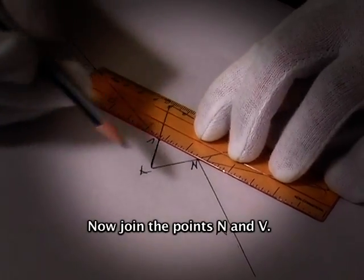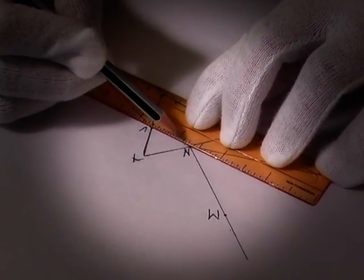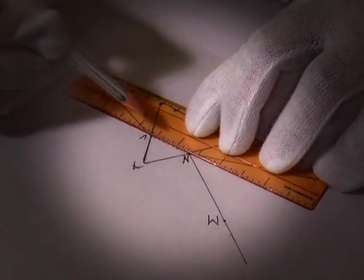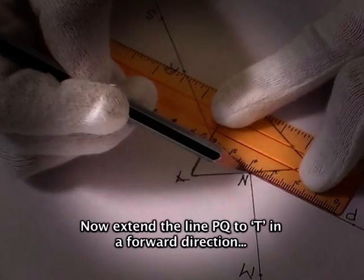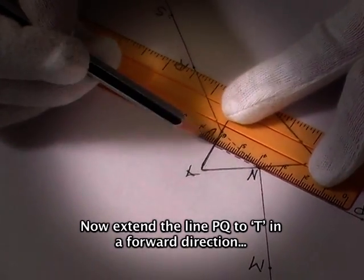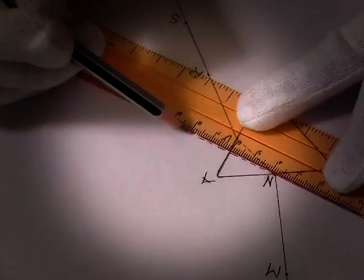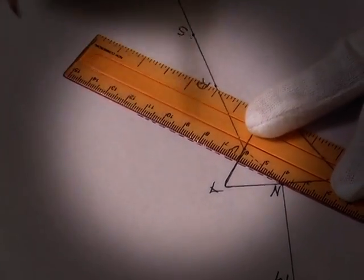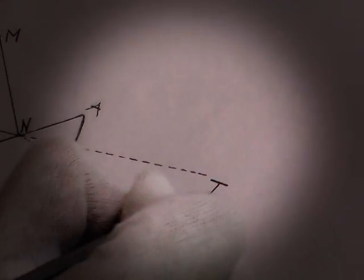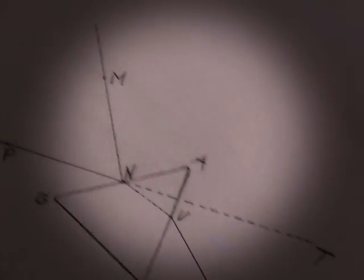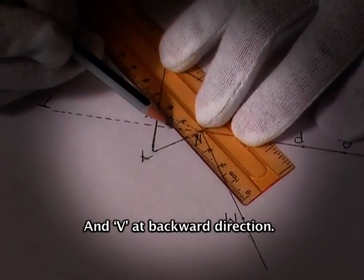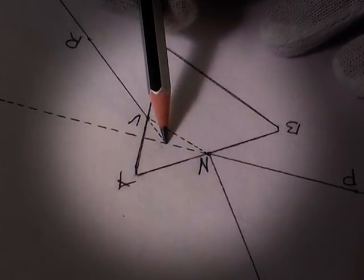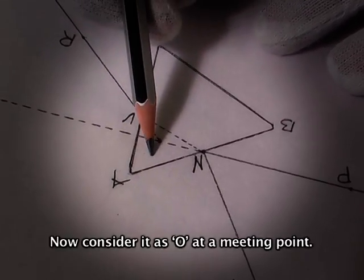Join the points N and V. Now extend the line PQ to T in a forward direction and V in a backward direction. Consider it as O at the meeting point.